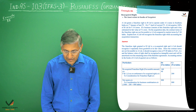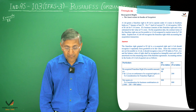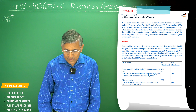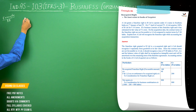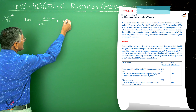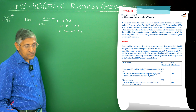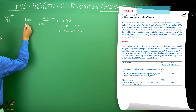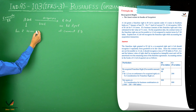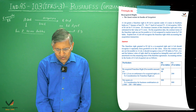In Example 88, the data given is: A Limited grants franchise rights to B Limited to offer under A's name in Southern India on 1st January of the last financial year. On 1st April of the current financial year, A Limited acquired 100% of B Limited for a consideration of rupees 10 crores, i.e., 1000 lakhs.